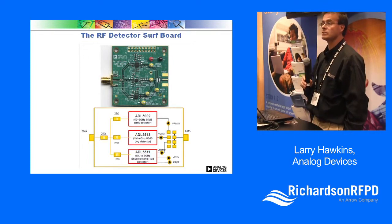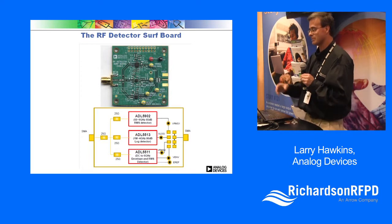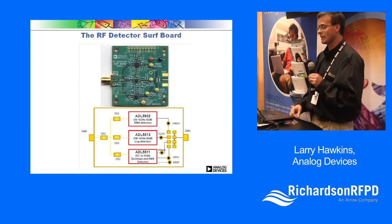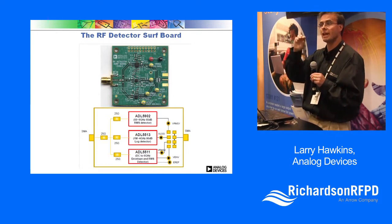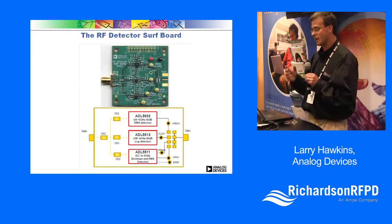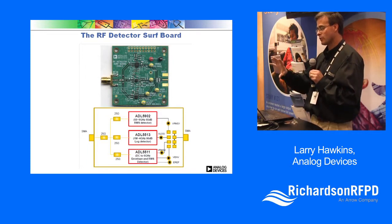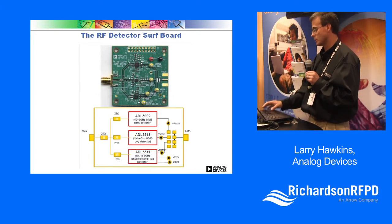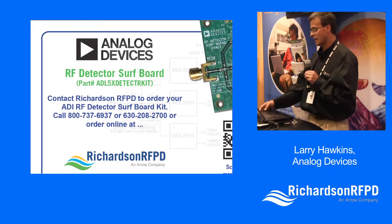Richardson Electronics offers an RF detector evaluation board. It includes the ADL5902, a 9 GHz RMS detector; the ADL5513, an RMS detector with envelope detection; and the ADL5511, a 1 to 4 GHz part — all three power detectors on one board. You can evaluate any one of those devices using that single board.